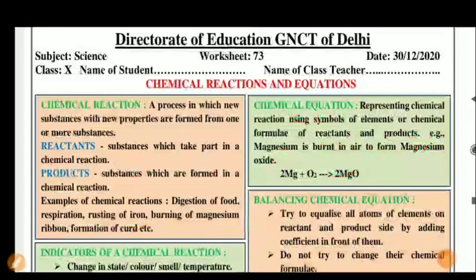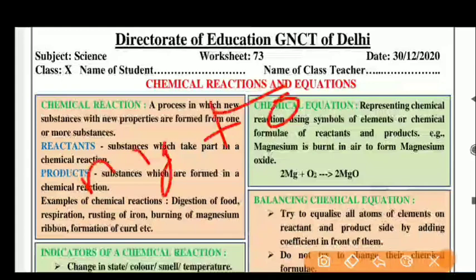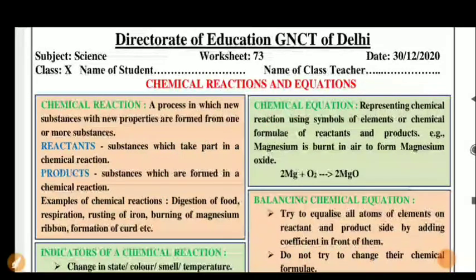A chemical equation represents a chemical reaction along with symbols and elements — using chemical formulas of reactants and products. For example, magnesium is burnt in air to form magnesium oxide. When you represent a chemical reaction using symbols and arrows, it is easy to understand. If you write it in words, it will be very big and difficult. This is why we use symbols and notation. You can write it as: Mg plus O2 gives MgO.